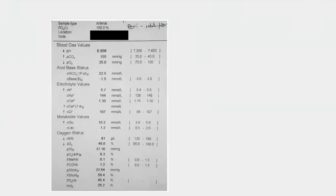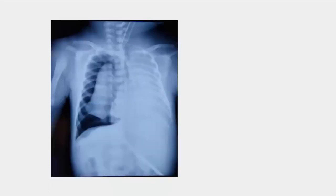Whenever a ventilated patient develops severe respiratory acidosis with very high PCO2 — values like 100, 105, 150 — think of either pneumothorax or tube block. In this case, since the tube was just replaced, a tube block is unlikely. The chest X-ray showed the ET tube slightly high, the right lung collapsed, mediastinum shifted to the right, and air collection on the right side — confirming a right-sided tension pneumothorax.